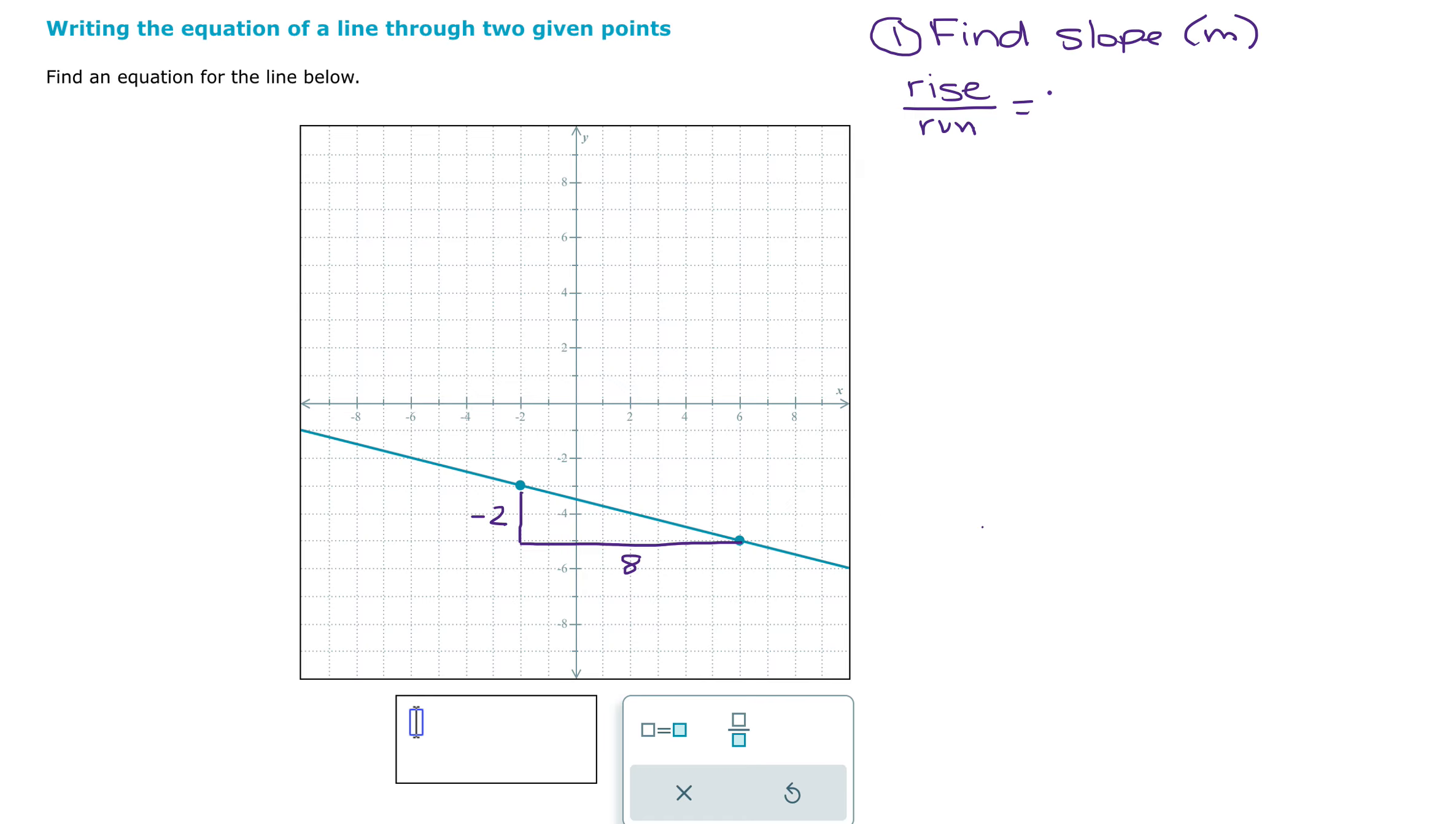So my rise is negative two, my run is eight, and so it's negative two over eight, or negative one-fourth. Make sure that you're taking into account that it's negative because our line is sloping downward. If the line was sloping upward, then I would expect to have a positive slope.